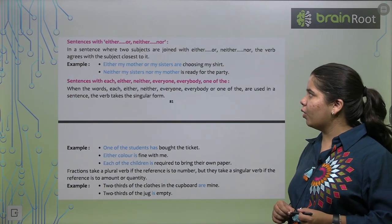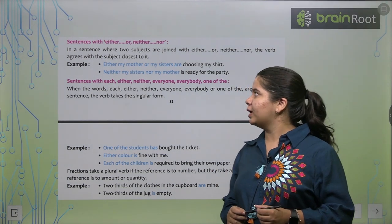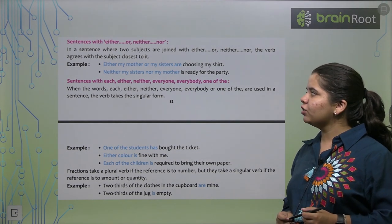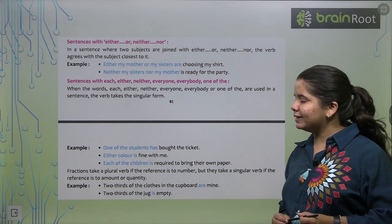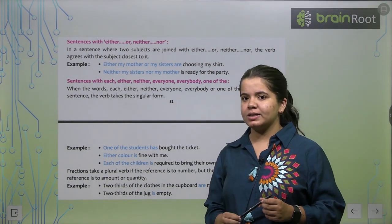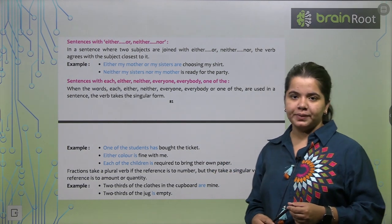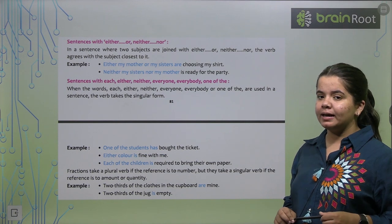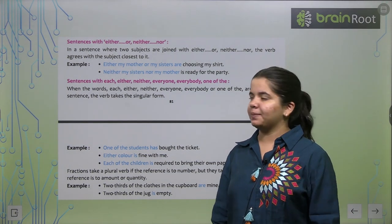Now, sentences with either or neither nor. Jaise, either my brother or my sisters are choosing my shirt. Neither of my sisters nor my mother is. Toh, in ke saath bhi hume singular verb hi use karna hai. Either or, neither nor ke saath singular verb hi use hoga. All these rules, agar aap baar baar padhenge, tabhi aapko yeh dhyan mein rahenge. Because when you do the exercise, aapko yeh rules bohot zyada kaam aayenge.